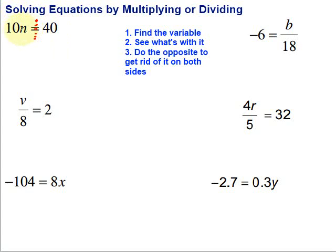Now, what does it mean when we have a number written beside a variable? What operation is that? That's multiplication. Well, if we're multiplying by 10, what would be the opposite so we could get rid of that? Well, the opposite of multiplication is division, so we're going to divide both sides of our equation by 10. So divide by 10 over here, and I'm going to do the same thing on this side, dividing by 10.